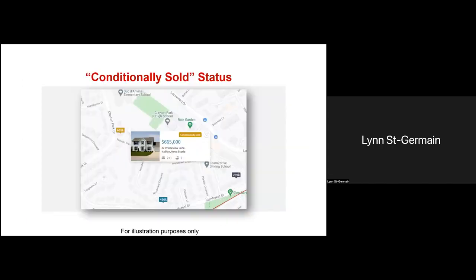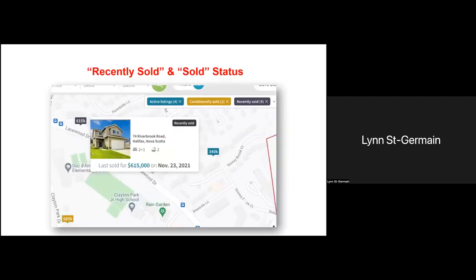We would add these tags, and this status is derived from the data we receive from the board upload, because these properties are still considered active. We want to make sure the consumer has a much better experience when doing their searches. The next step would be to show, where permitted, recently sold status — where 'recently' equates to the previous 90 days. The data display would indicate the amount and date of the most recent transaction involving that particular property.